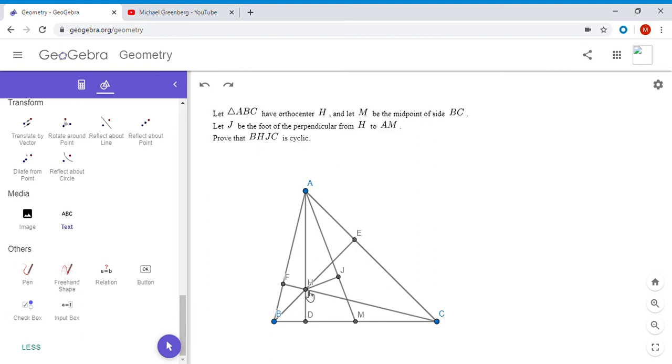The first thing to note is that angle HDM equals angle HJM which are both 90 degrees. Because of that, HJDM has to be a cyclic quadrilateral because these two opposite angles add up to 180 degrees. Now there's another one that pops out too because we have all these right angles: angle HFA, angle HJA, and angle HEA are all right angles and they all subtend AH, so all of those points have to lie on a circle.